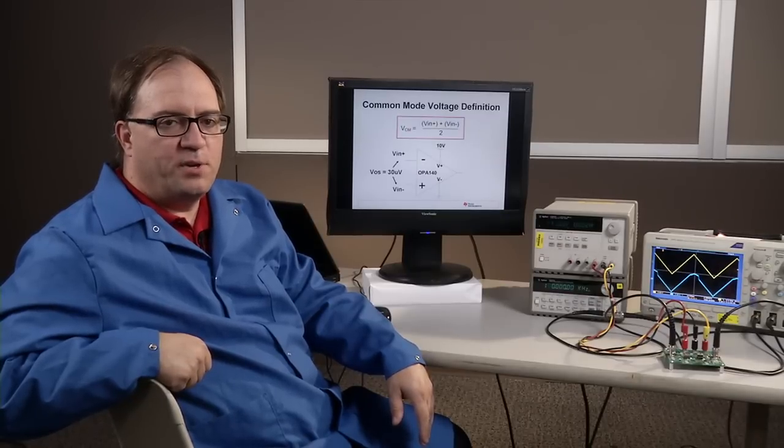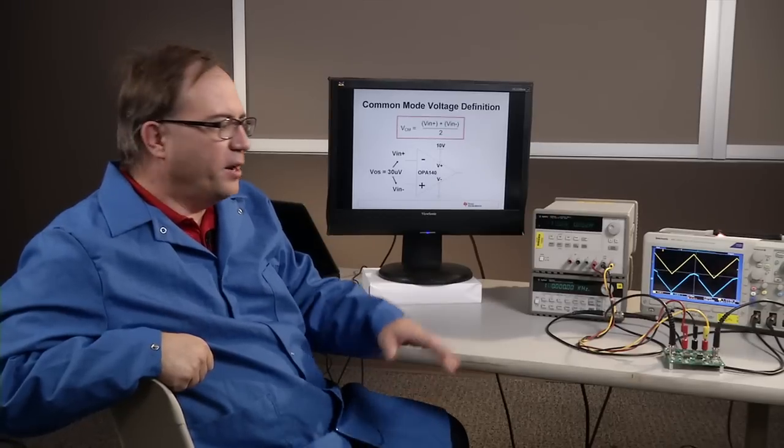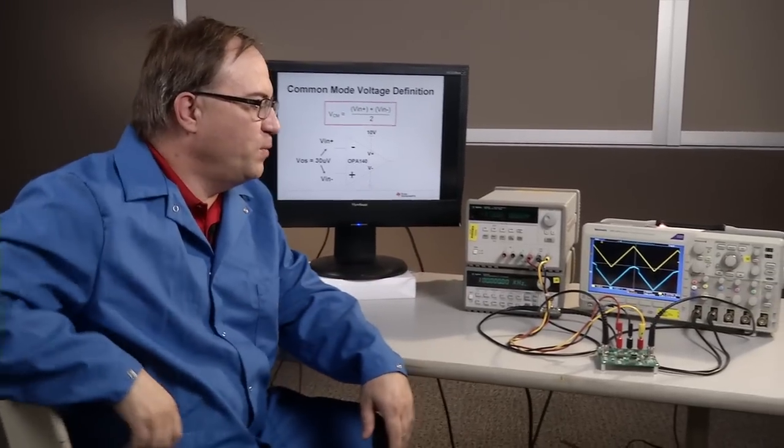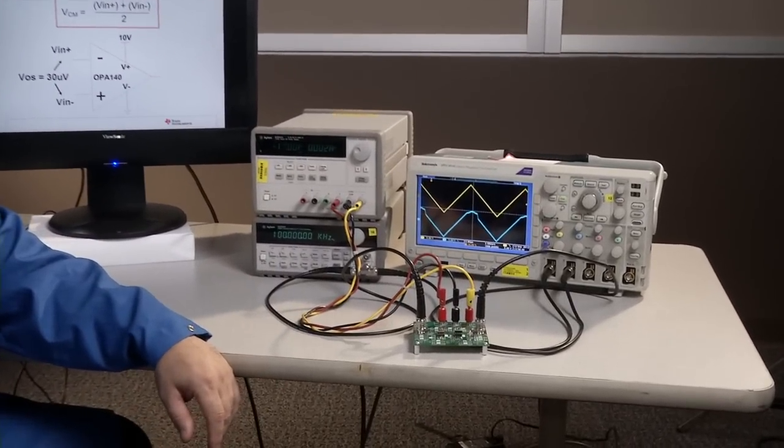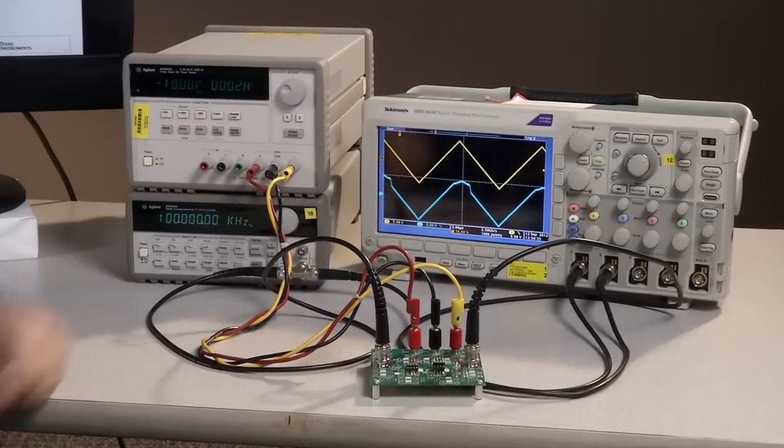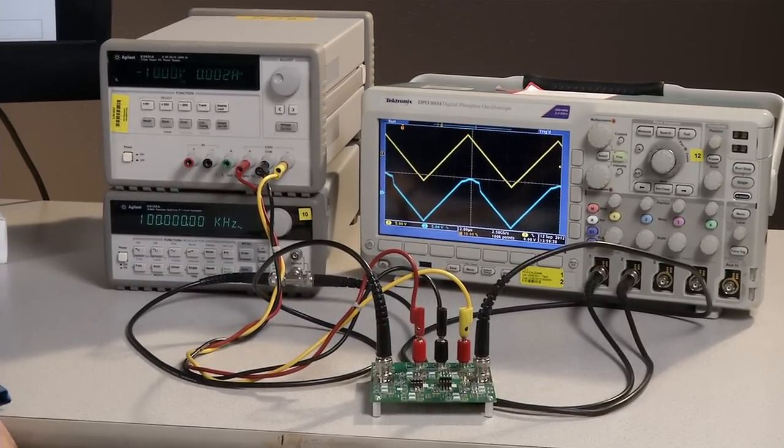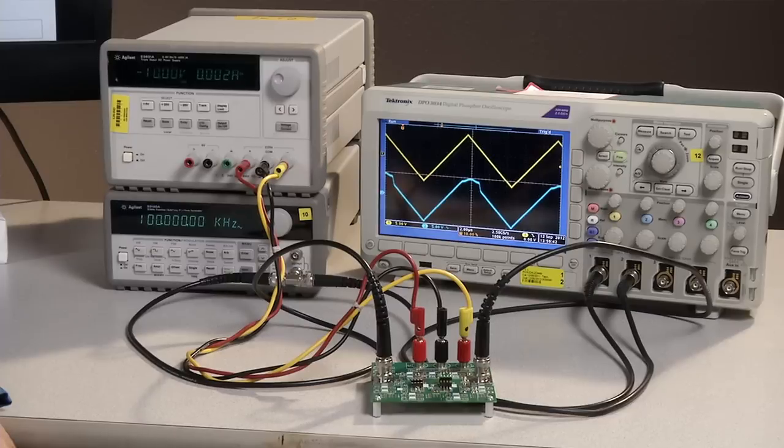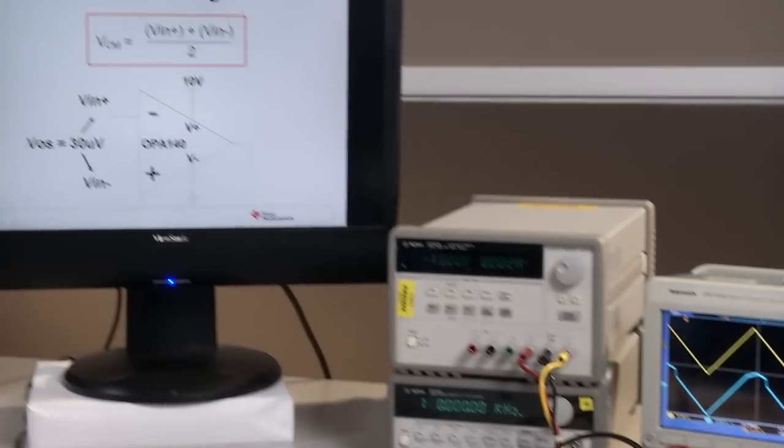Today we're going to talk about input and output swing limitations with op amps. Over here we have a live world demo and we're taking an amplifier that's in a voltage follower configuration, applying a triangle wave to the input and the output is shown below in blue. The input is a nice linear triangle wave but the output is linear on the negative half cycle but distorted on the positive half cycle. What causes that distortion and clipping and how can we avoid it? Let's look at some slides for further detail.